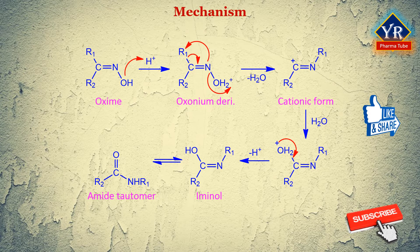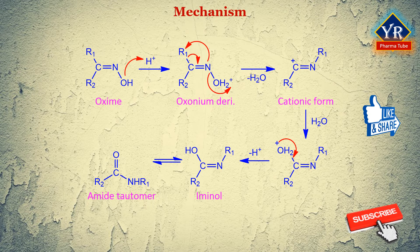The migration of the substituent R together with the bonding electrons and loss of water proceed simultaneously. The cationic species thus formed reacts with water to give the iminol, which tautomerizes to a more stable amide tautomer — that is, the N-substituted carboxylic amide.